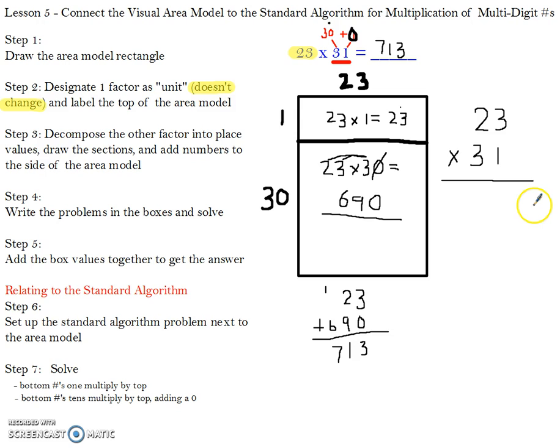Step 7 is to solve your standard algorithm. First, you want to take the bottom ones place here, which just happens to be a 1, and you want to multiply by the top number. So 1 times 3 is 3, and then 1 times 2 is 2. Then you want to take the bottom tens and multiply that by the top, making sure to add that zero because you are now creating a tens. So add the zero here, and then you're taking this 3 and multiplying it by 3, which is 9, and then 3 times 2, which is 6.